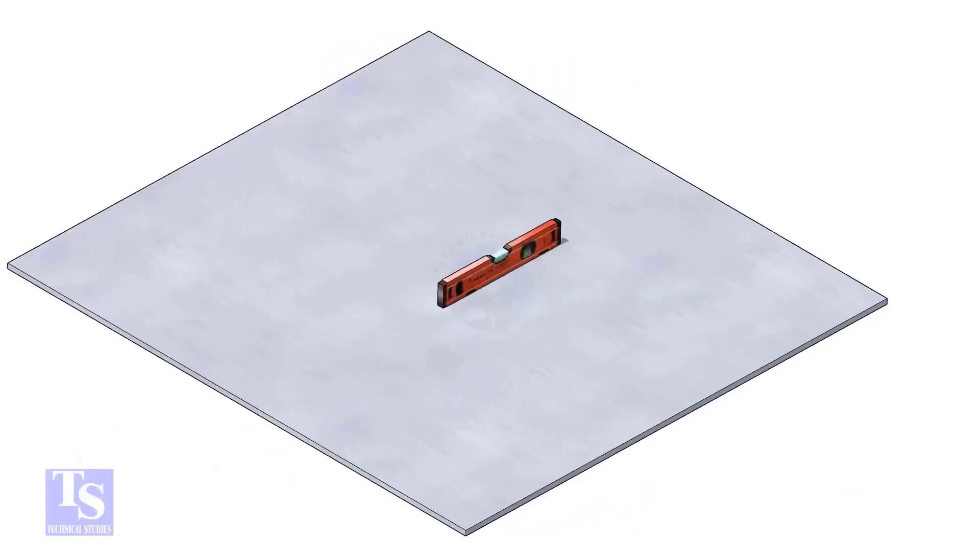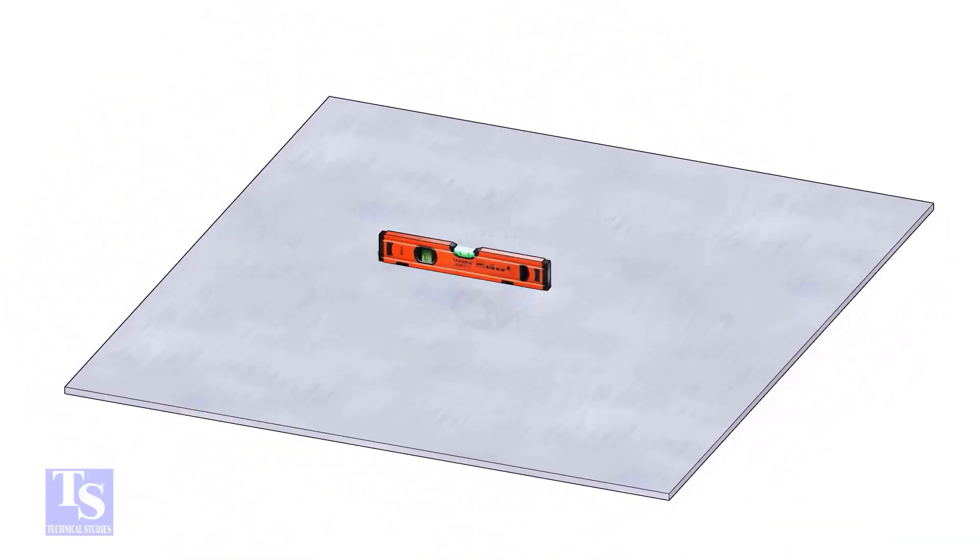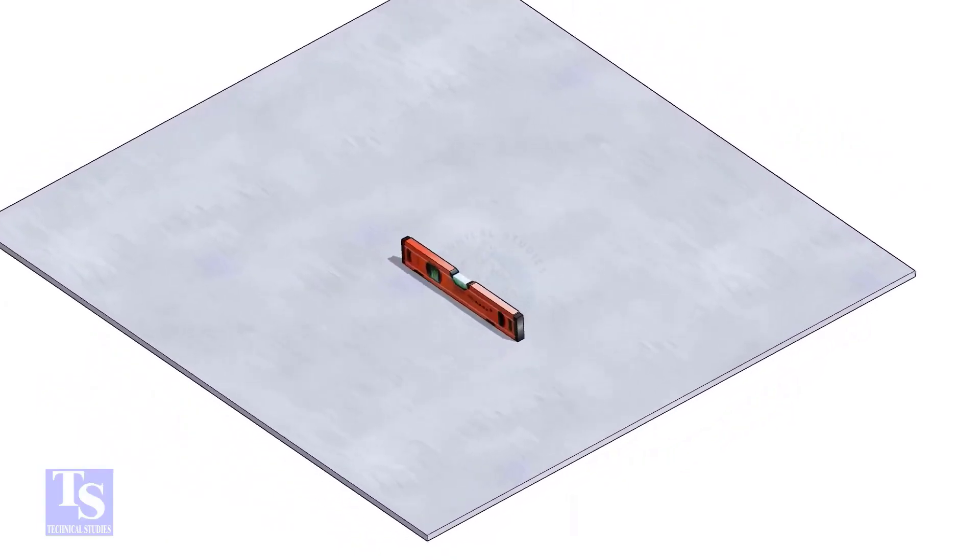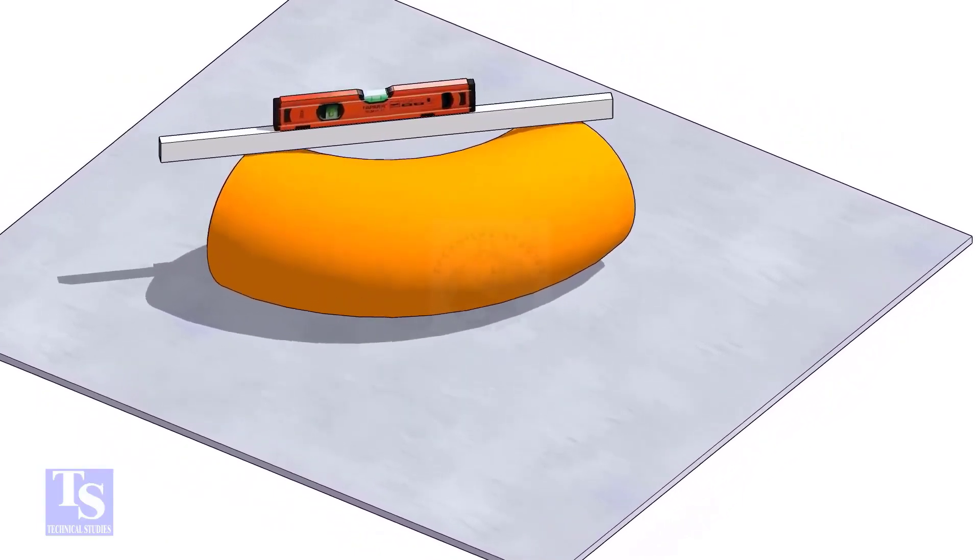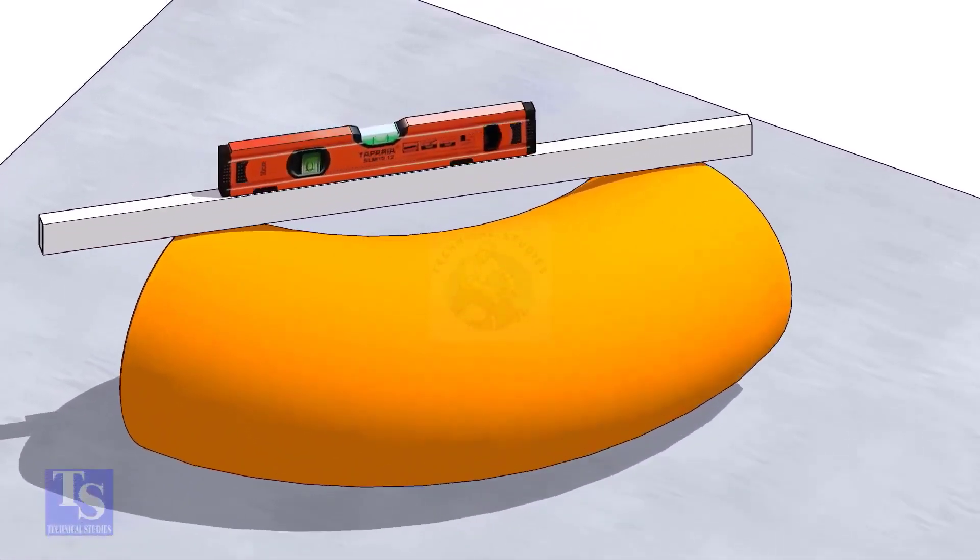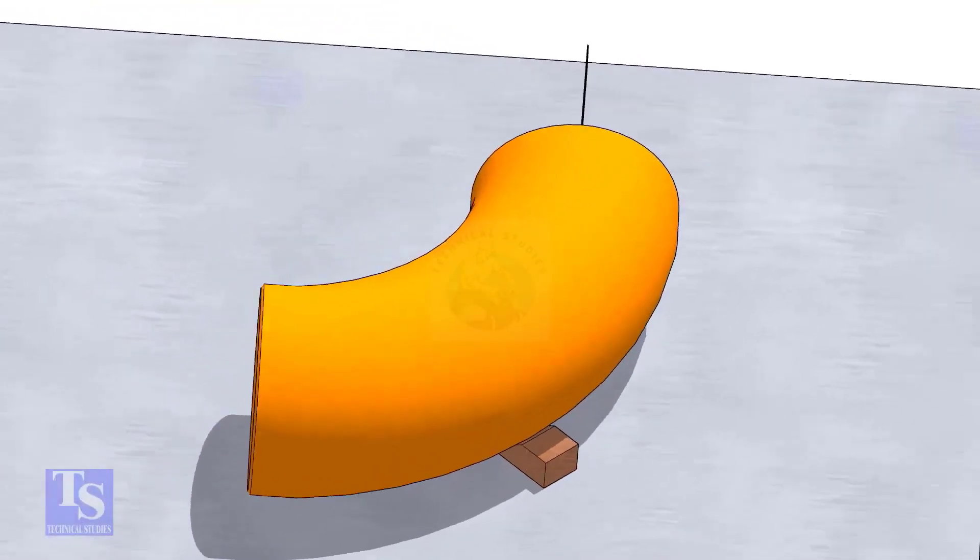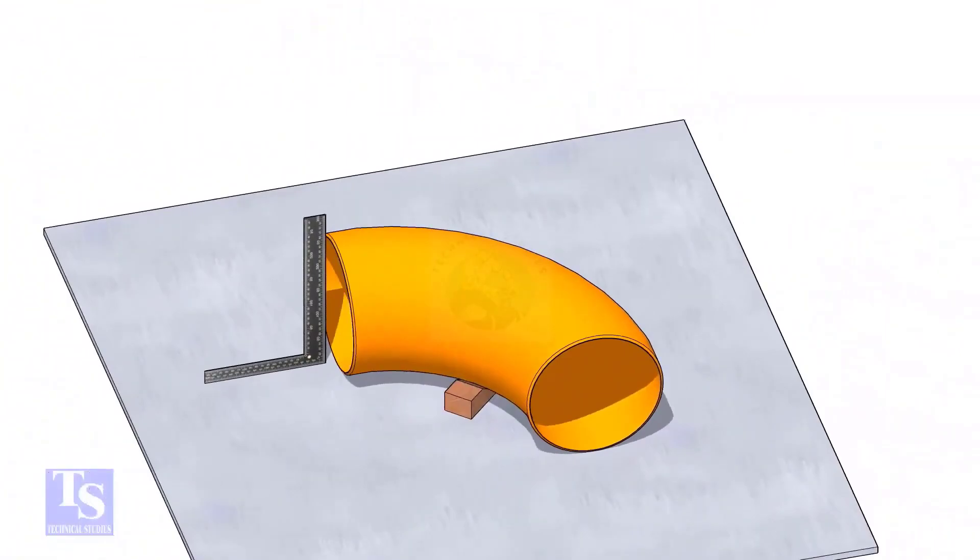Let us mark the center of the elbow. Choose a leveled plate and put the elbow on it. Check the level of the elbow. Check the squareness of the face of the elbow with the plate. If necessary, put some packing below as shown.